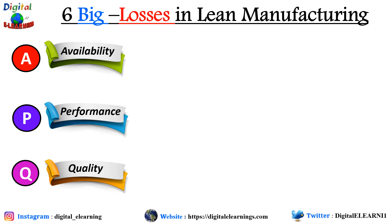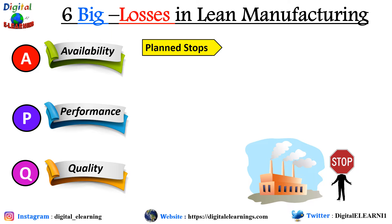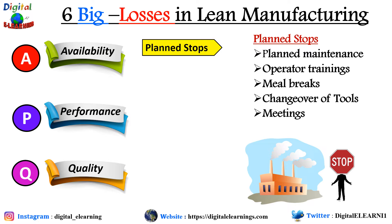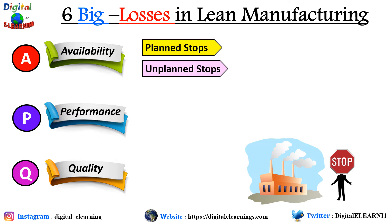Starting with availability, losses under availability are split into planned stops and unplanned stops. Planned stops include planned maintenance — a proactive approach where a fixed number of hours are dedicated — operator training to build skills to current standards, meal breaks including lunch and coffee breaks, changeover of tools, project or team meetings, and inspection whether in-process, raw material, or final inspection.